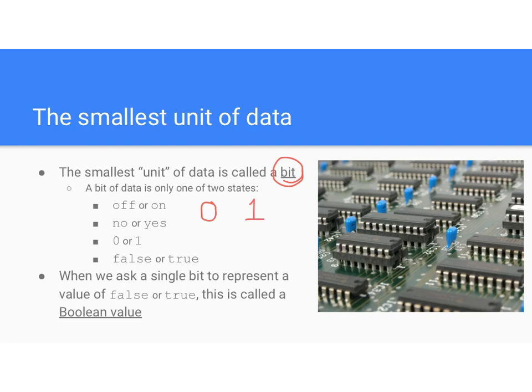There are other ways of interpreting a single bit of data. You can interpret a zero as a no or a one as a yes. You can interpret a zero as a false or a one as a true. When we ask a single bit to represent a false or a true, we call it a Boolean value. When you're talking about true/false logic — trues and falses — we're talking about Boolean logic.